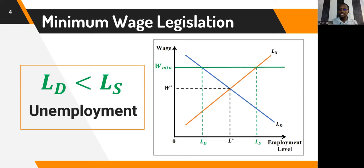On the labor demand curve, because the minimum wage cuts across it first, you notice that labor demand is very low. But with the institution of a minimum wage, labor supply becomes greater because the minimum wage is fixed above the equilibrium wage rate. Wages become so high that employers demand fewer workers, while more people want to offer themselves for work. So labor supply is greater than labor demand, meaning very few people are actually employed and a large number will not get employment — leading to unemployment.